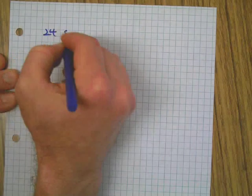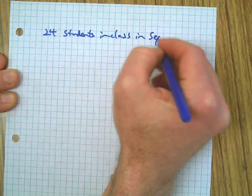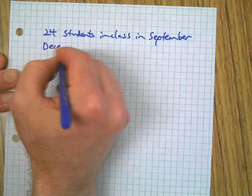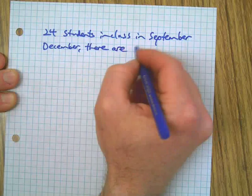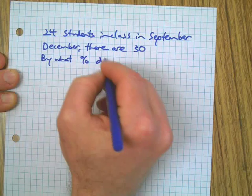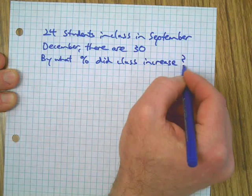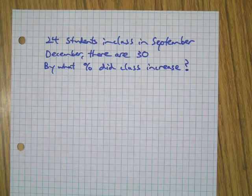Let's do a sample problem before this video goes too long. Let's say I've got 24 students in a class in September, and then later on in December there are 30. By what percentage did the class size increase? Go ahead and pause the video and work that out.